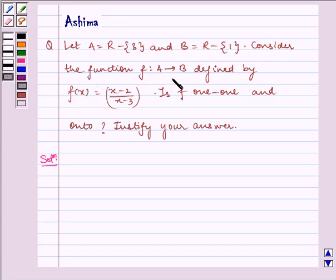Consider the function f from A to B defined by f(x) is equal to (x minus 2) by (x minus 3). Is f one-one and onto? Justify your answer. Now let us write the solution.